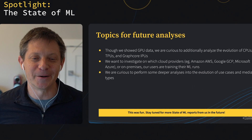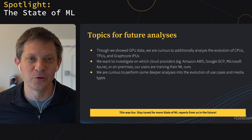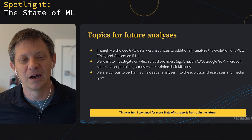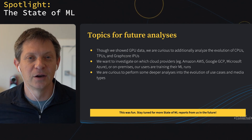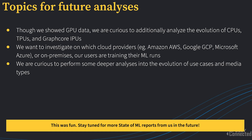As with all first analyses, this begs for further work. We've left ourselves topics for future State of ML reports, including more analysis on CPUs, Google's TPUs, and Graphcore's IPUs; which clouds — Amazon, Google, Microsoft, or on-premise — our users are training on; and deeper analysis into the evolution of use cases and media types in ML training. This was really fun, so we will do it again. Please look forward to future State of ML reports from us at Weights and Biases, and thank you for your time.